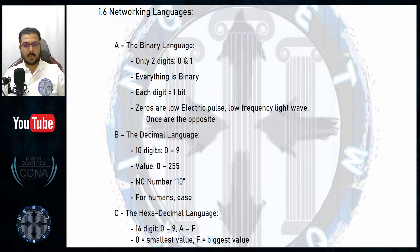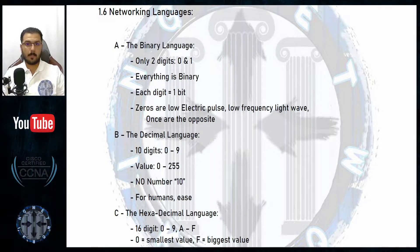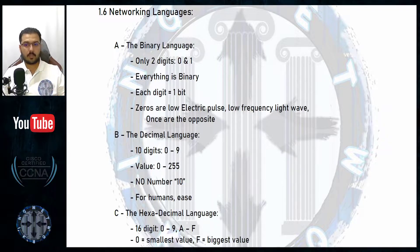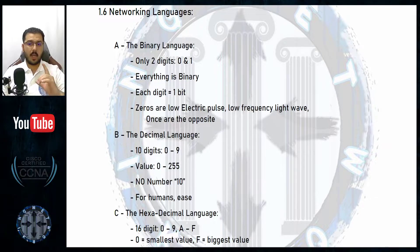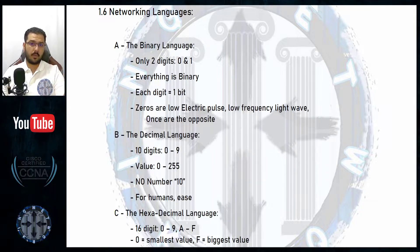Devices understand multiple languages. They use only one or two of these languages internally between them — for internal programmability and operations between one device and another, like a router and a switch, a switch and a computer, a router and a firewall. But when they speak back to you, they will only show the language that you understand.